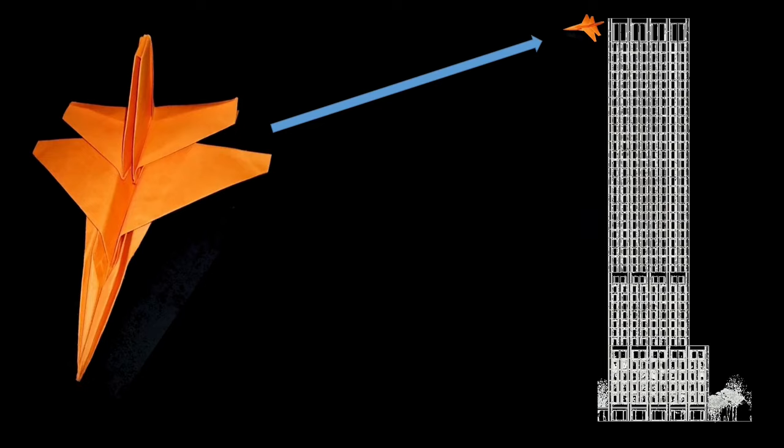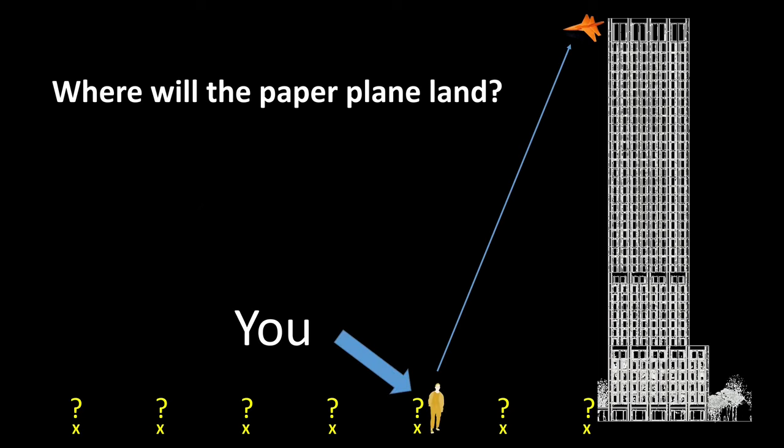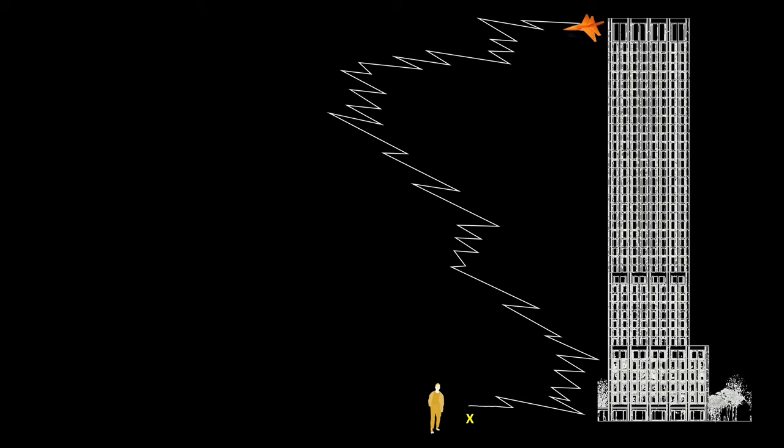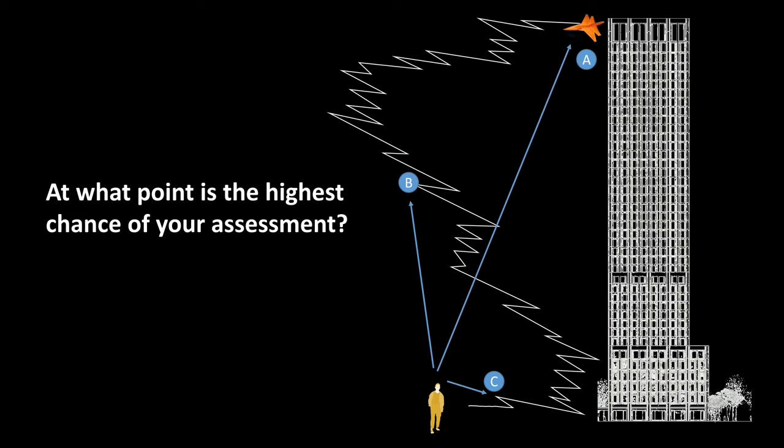To do this, we will first do a small experiment. A friend of yours wants to push a homemade paper airplane down from the top floor of a high-rise building. You yourself stand in front of the skyscraper and now have to assess where this paper plane could land. Your friend starts the paper plane and after a few turns it happens to land right in front of your feet. Let's assume you have to make a prediction at points A, B or C where the paper plane will land. At what point is it most likely that your prediction is correct?